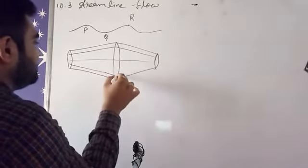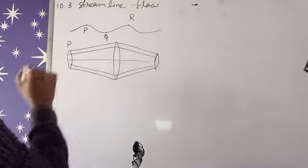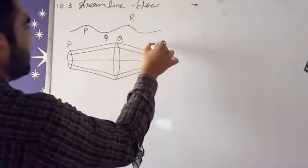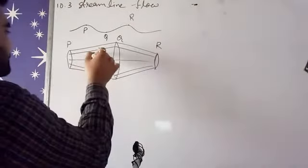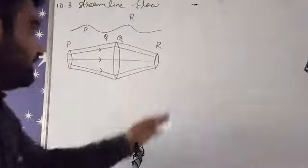Then from here it goes ahead, then from here it bends. So if this is my P plane, this is Q, and this is R plane, this is how the flow is going on right now.